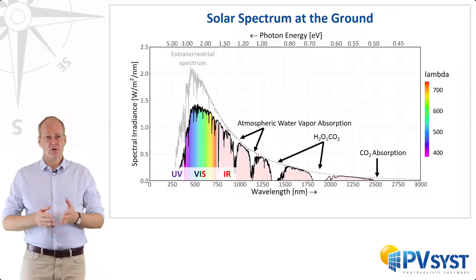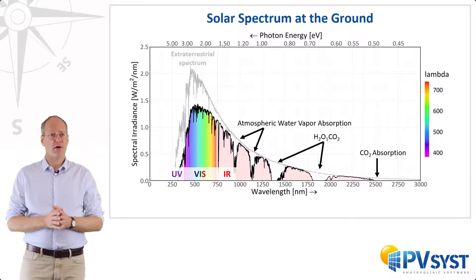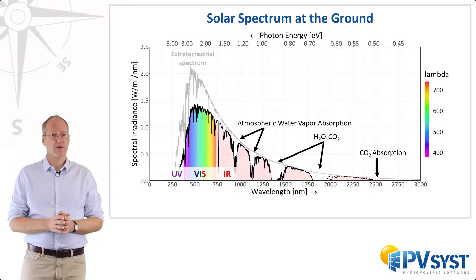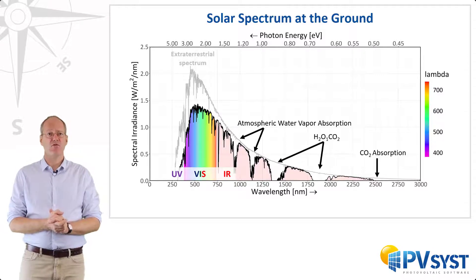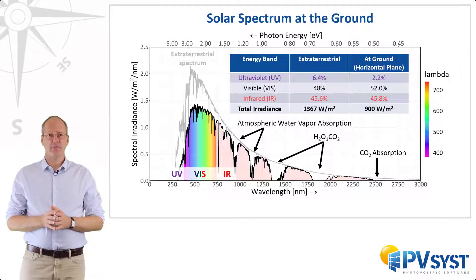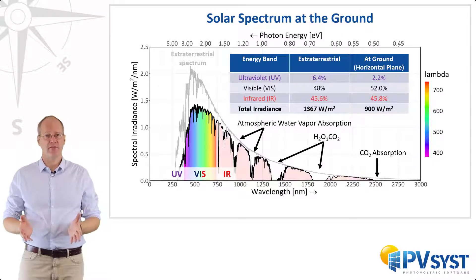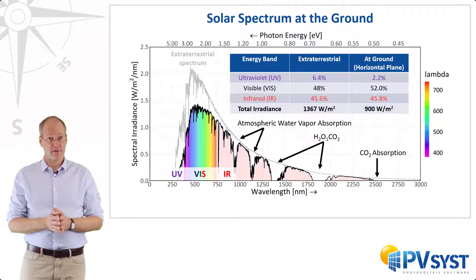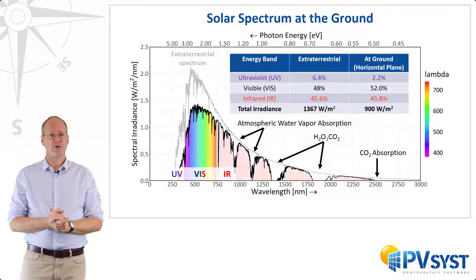As a result, the total irradiance is reduced from 1367 watts per square meter outside of the atmosphere to 900 watts per square meter at ground level. The change in the shape of the spectrum is reflected in the changing spectral composition of the sunlight. Outside of the atmosphere, the visible part of the sun's irradiance represents about 48% of the total power, the infrared 45.6%, and the ultraviolet comprises the remaining 6.4%.